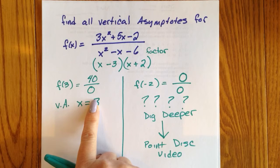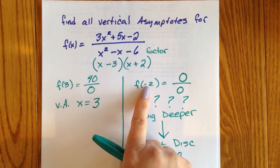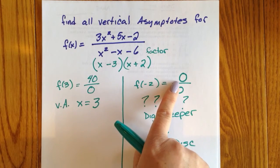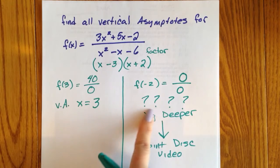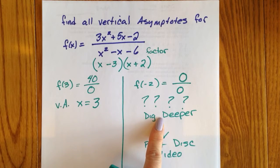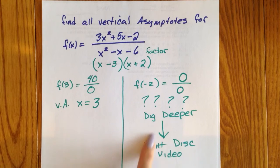However, at negative two, we plugged in negative two and it made zero over zero. And I left you hanging saying we would need to dig deeper and discuss point discontinuities.